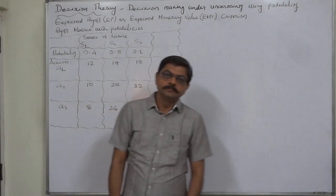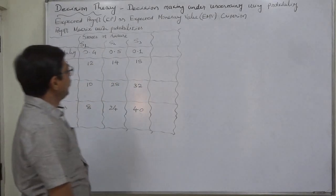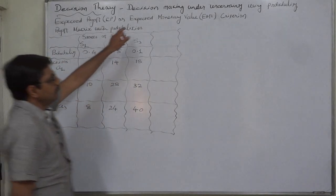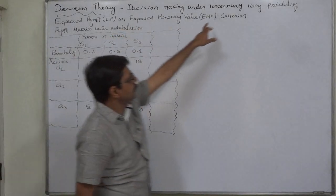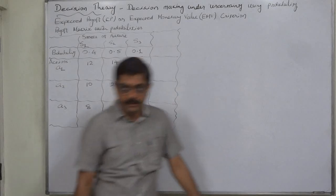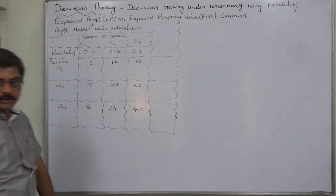Hello and welcome. This is decision theory — specifically decision making under uncertainty using probability. How to use probability?